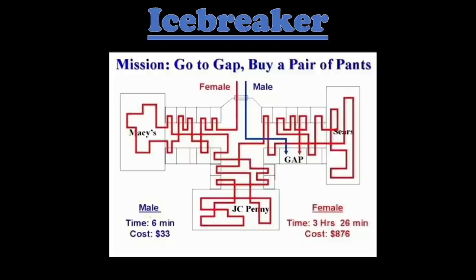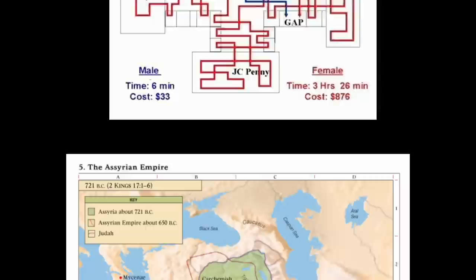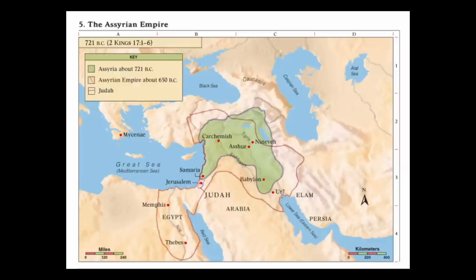Maps can teach you more than just how to get from point A to point B. I found in my years of teaching that maps can teach gospel principles as well. There's a map in the back of your church-produced version of the scriptures that contains a fascinating principle — it's map number five. At first glance it might not look like much. Why should I care about the borders of the Assyrian Empire between 721 B.C. and 650 B.C.? Well, I think you should care.